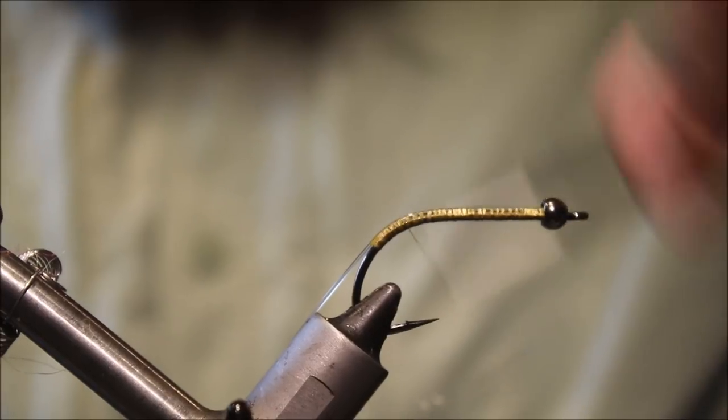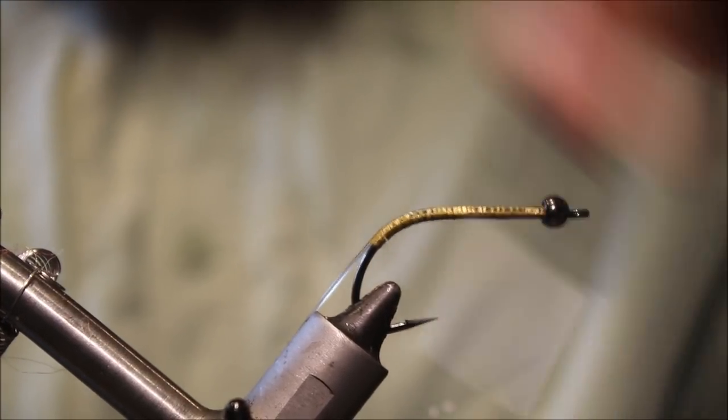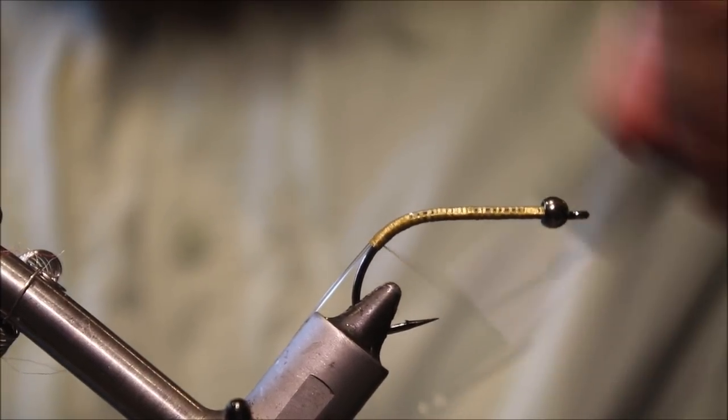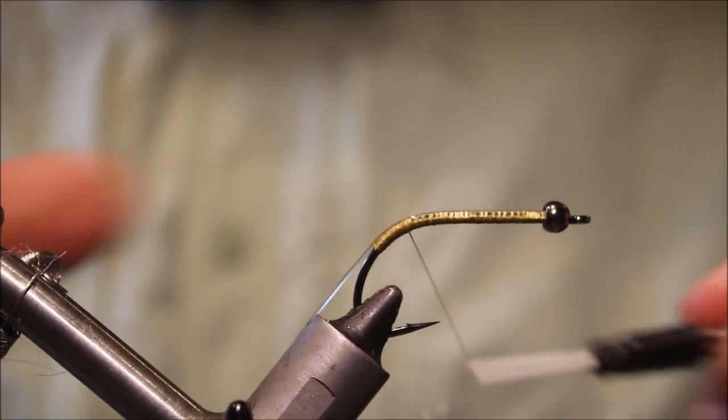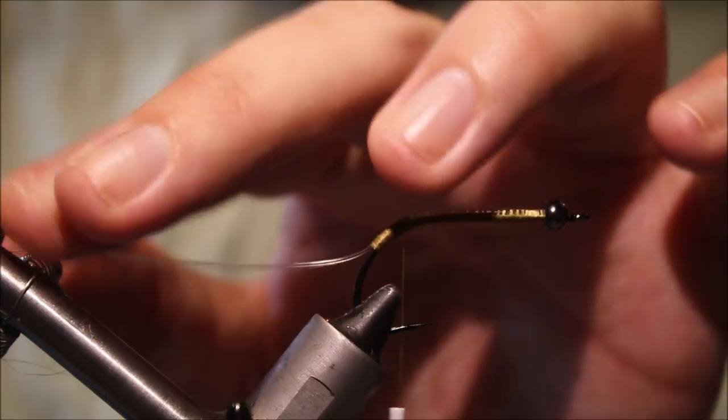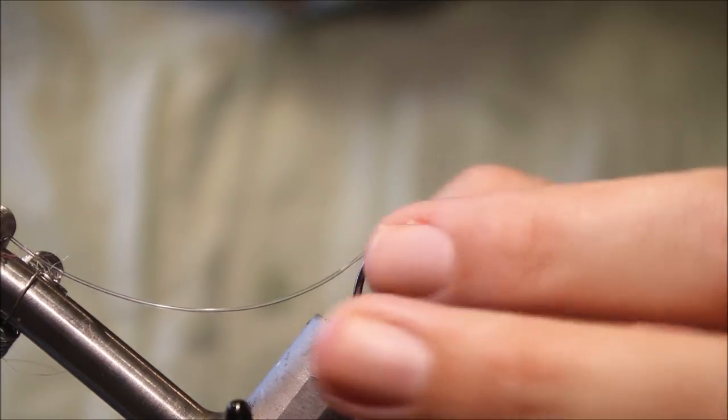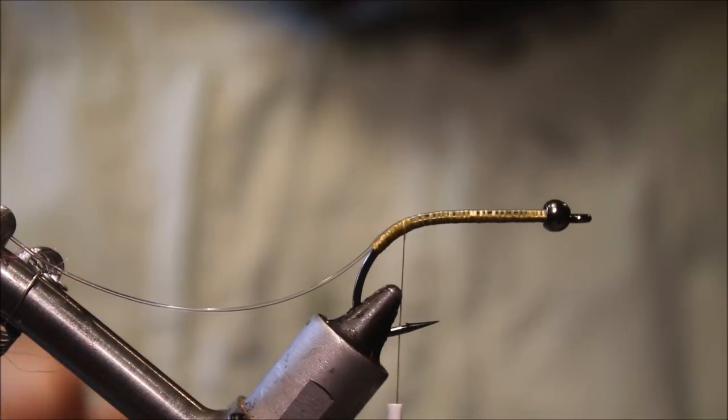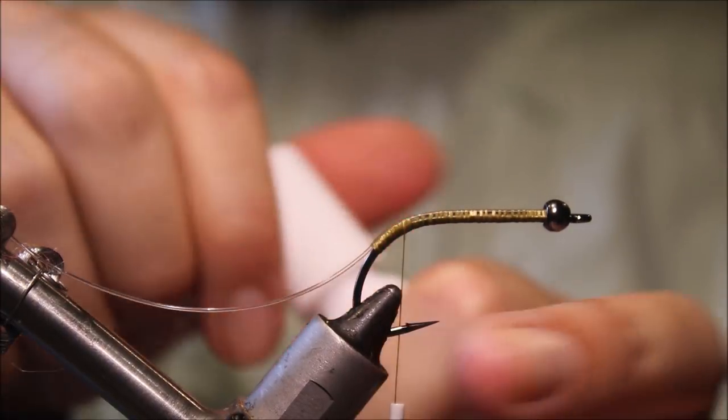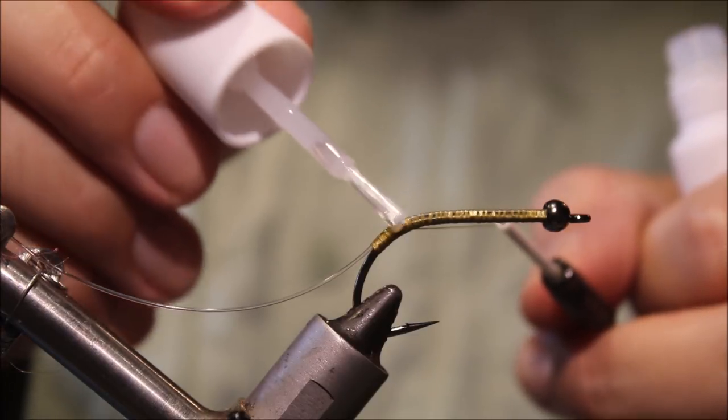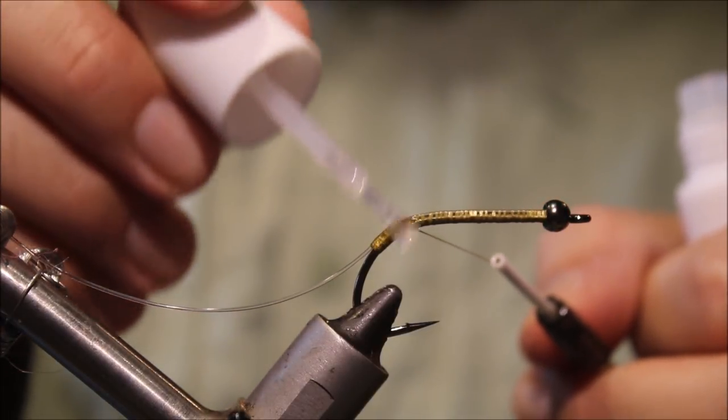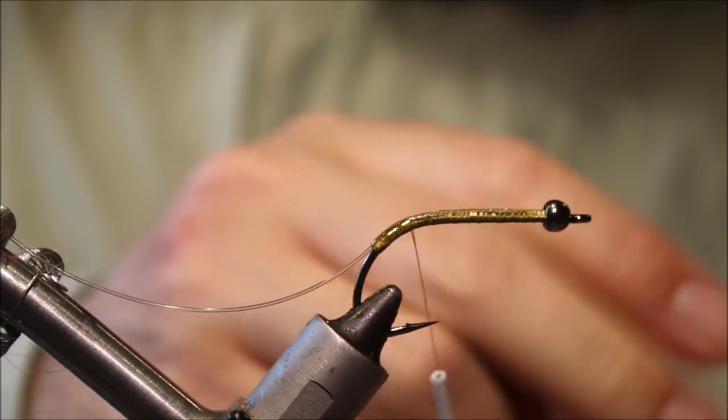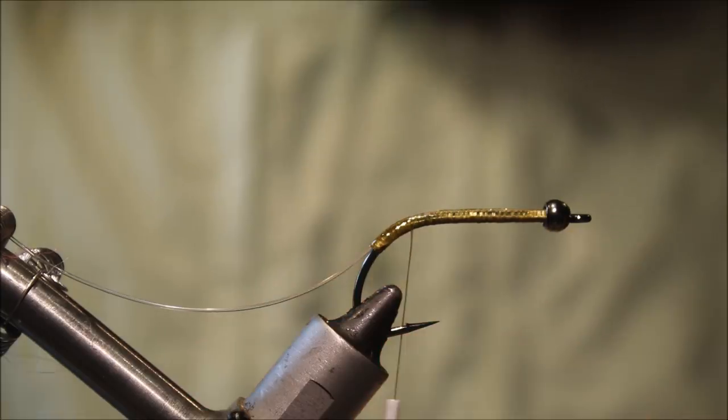And I like to just put a couple of layers of thread at the back here where the thread wraps are going to probably be exposed. You could if you like use a hot color here, a fluorescent orange or something, just to add a bit of hot spot. Now, as this thread is likely to be exposed, a bit of super glue, just run it along the whole shank.